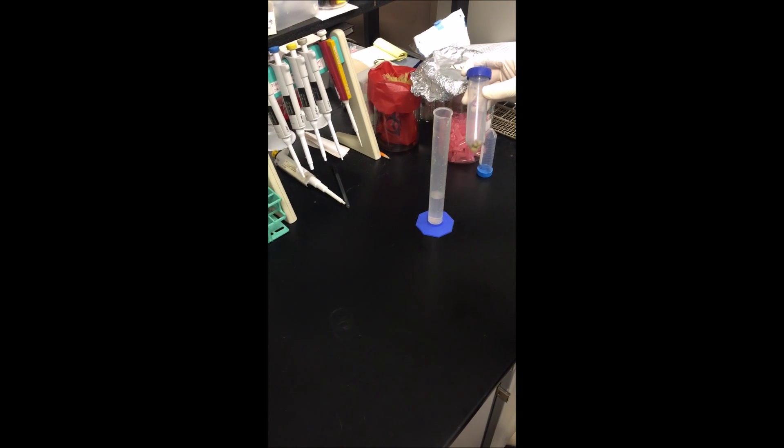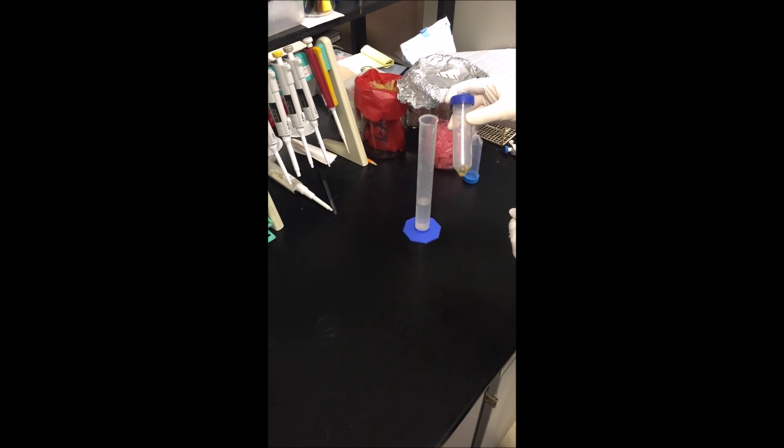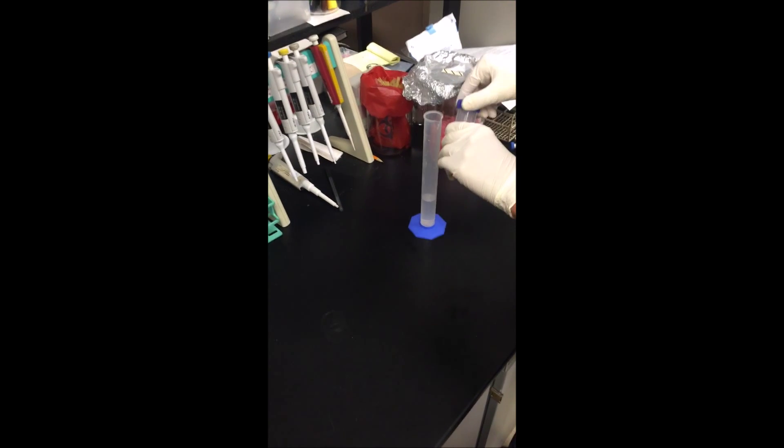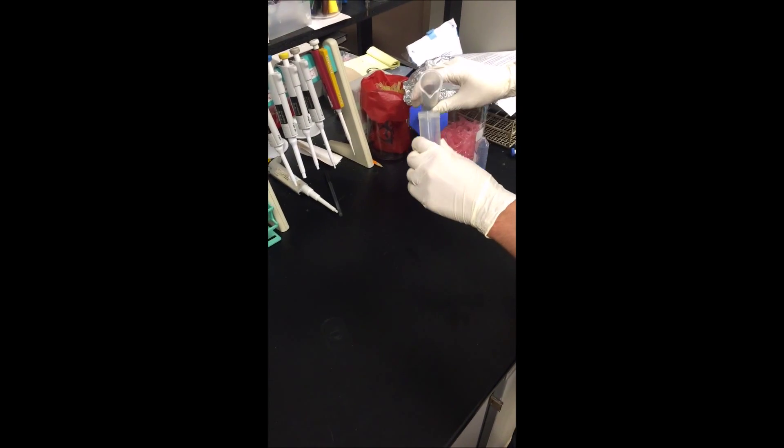Alright guys, now that you've sterilized your lab bench and you've got your soybean seeds in a clean conical tube, you need to cover them in the 1% bleach solution that you have.